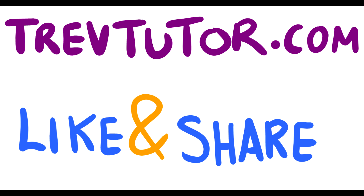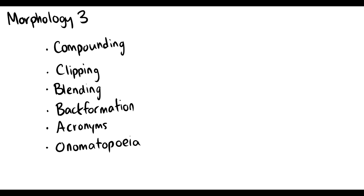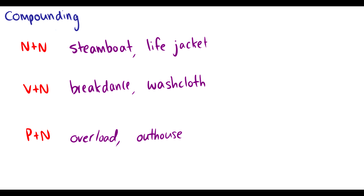Welcome back to Introductory Linguistics. Today we're going to start the third part of morphology — this is word creation day. So this is how we make words: compounding, clipping, blending, backformation, acronyms, and onomatopoeia will be talked about. I hinted at onomatopoeia in the last video, so I can't wait to talk about that. Anyway, we'll start off with compounding.